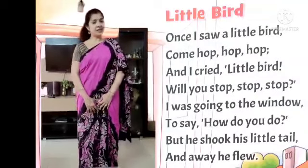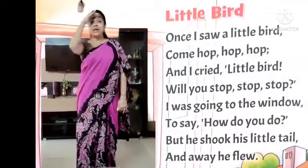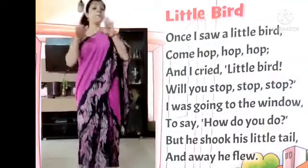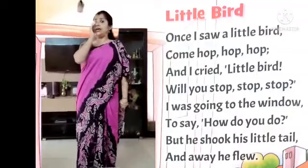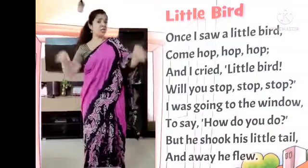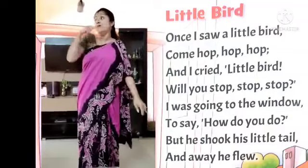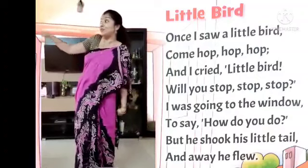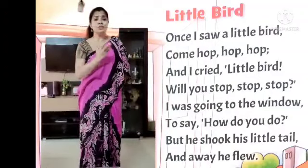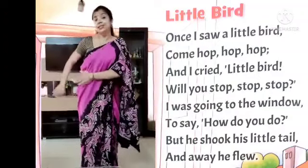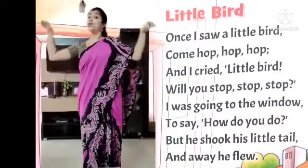The name of the rhyme is Little Bird. Once I saw a little bird come hop, hop, hop. And I cried little bird, will you stop, stop, stop. I was going to the window to say how do you do. But he shook his little tail and away he flew.